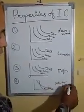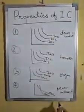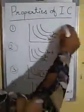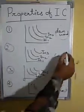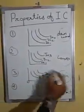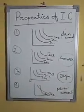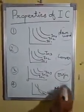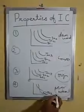So I have mentioned four properties of the IC curve. First, it is downward sloping. Second, it is convex. Third, greater the distance from the origin, higher will be the level of satisfaction. And fourth, IC curves never intersect each other.